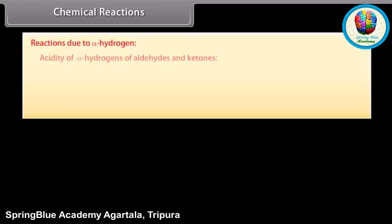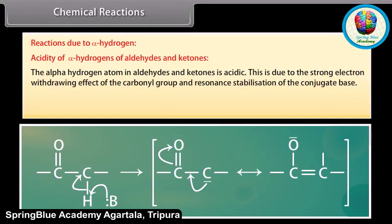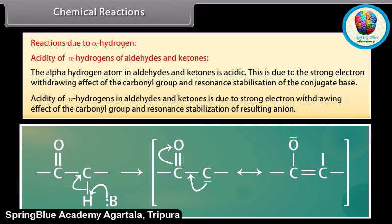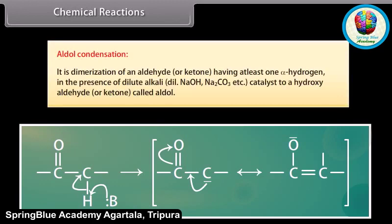Reactions due to alpha hydrogen — acidity of alpha hydrogens of aldehydes and ketones: the alpha hydrogen atom in aldehydes and ketones is acidic. This is due to the strong electron-withdrawing effect of the carbonyl group and resonance stabilization of the conjugate base. Acidity of alpha hydrogens in aldehydes and ketones is due to strong electron-withdrawing effect of the carbonyl group and resonance stabilization of the resulting anion.